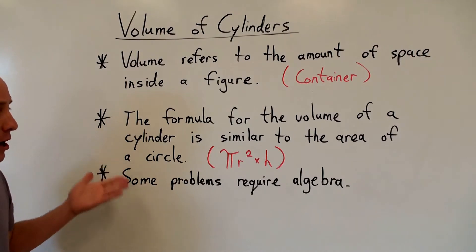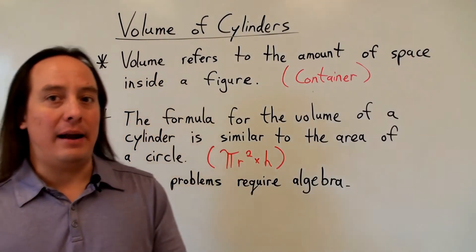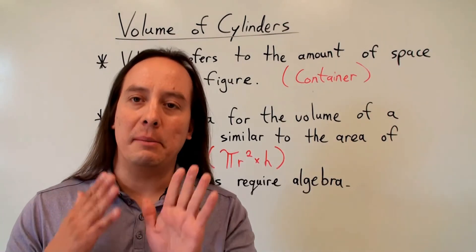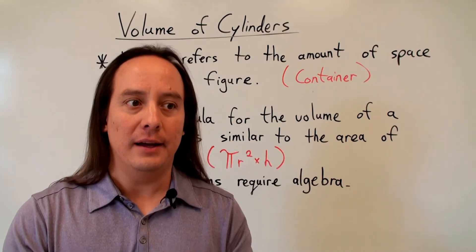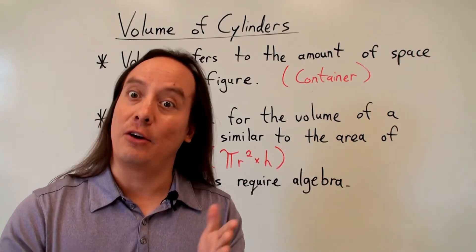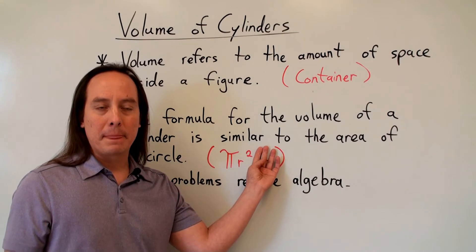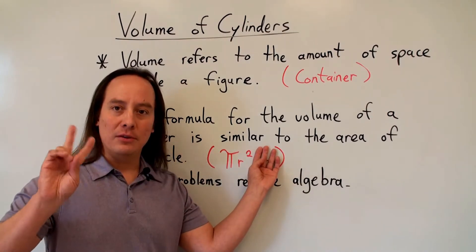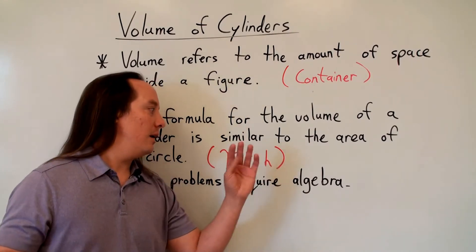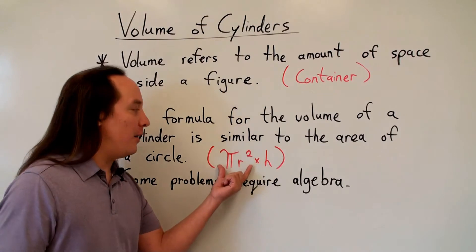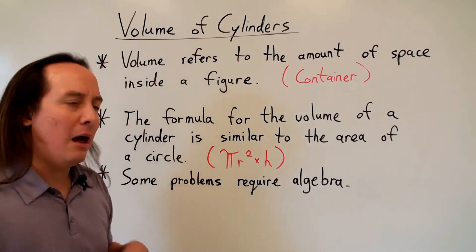The formula for the volume of a cylinder is very similar to the area of a circle. When we talk about area, we're talking about the flat surface of something — a two-dimensional shape like a square, rectangle, or circle. The formula for the area of a circle is pi r squared, which gives us a two-dimensional answer. When we're talking about volume, we're talking about a three-dimensional shape, and we add a third dimension. So if you remember the area of a circle, it's just adding one step more, one more dimension to get to the third dimension.